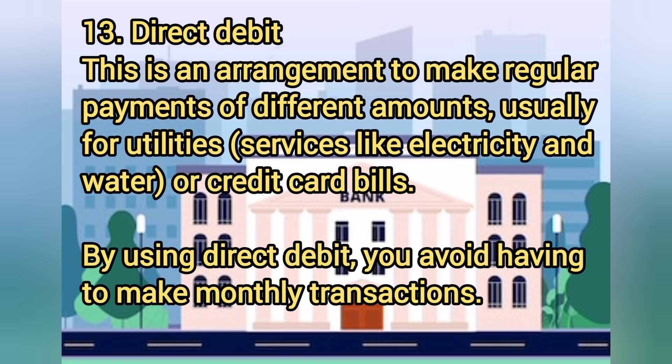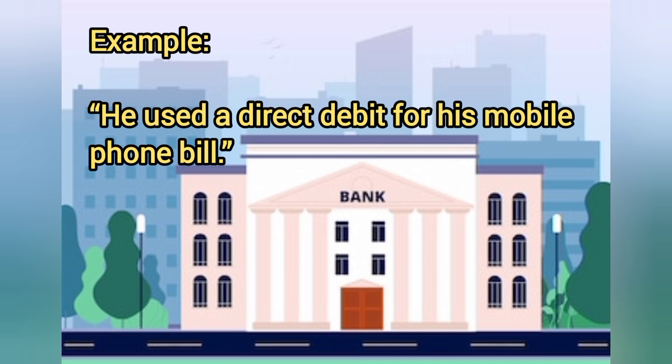Thirteen: direct debit. This is an arrangement to make regular payments of different amounts, usually for your utilities and services like electricity and water, or credit card bills. By using direct debit, you avoid having to make monthly transactions. Example: he used a direct debit for his mobile phone bill.